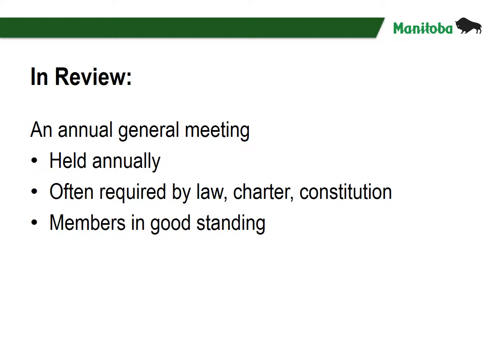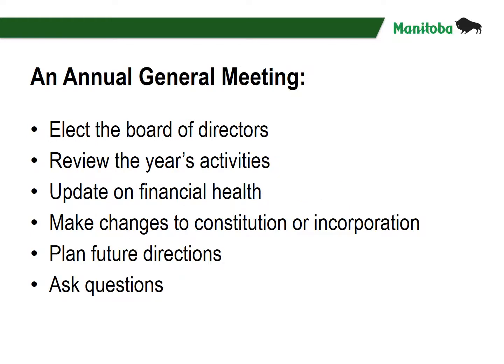In review, an annual general meeting is a meeting of official bodies and associations involving the general public, including companies with shareholders. It's held annually and is often required by law, constitution, charter, or bylaws governing the body, for members in good standing. An annual general meeting gives the members the opportunity to elect the board of directors, receive information about the past year's activities, progress, achievements, and milestones, find out about the organization's financial health, make changes to the incorporation objects and bylaws, receive information on future directions, and to ask questions.